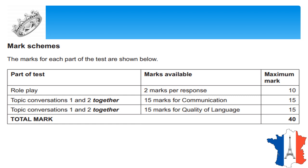How are the marks awarded? For the role play, it's two marks for each response. You have to be very clearly stating your response. Suppose the question is 'when' — you should mention a time frame. If it's 'where', you should mention a place. They will check whether you are forming proper sentences with proper tenses.